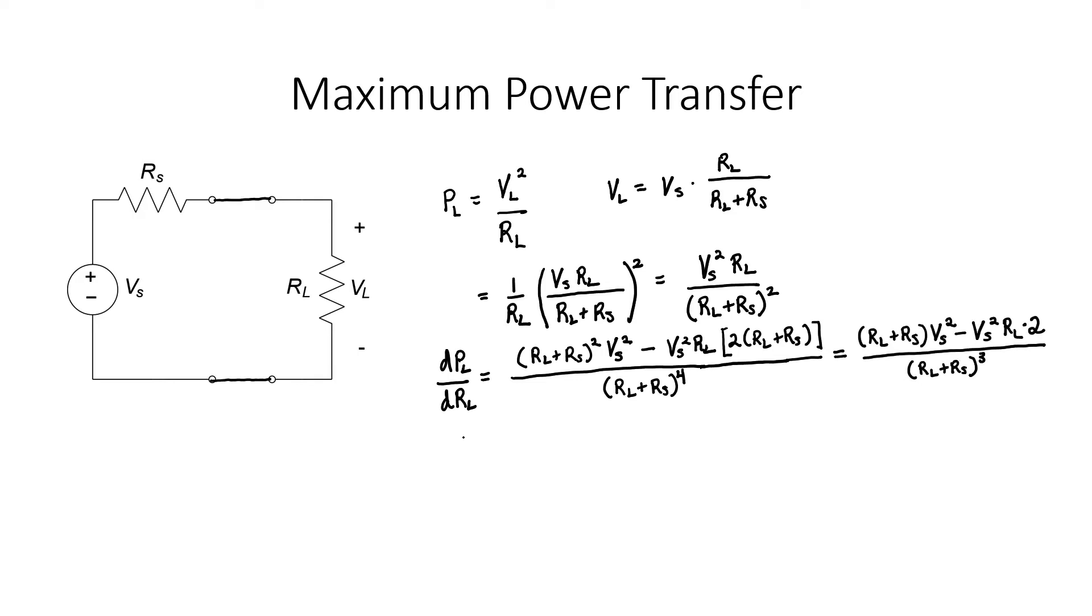To find the extreme or the maximum power, we need to set this derivative equal to zero. If I set this fraction equal to zero, I know that the numerator has to be zero.